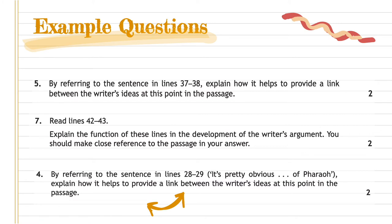Like 'in your own words', we're looking for the phrase 'using your own words'. For linking questions, the key phrases are: 'link', 'linking function', and 'link between'. For example, question five says: 'by referring to the sentence in lines 37 to 38, explain how it helped to provide a link between the writer's ideas at this point in the passage.' We see the phrase 'a link', so we know it's a linking question. Question seven says: 'explain the function of these lines in the development of the writer's argument' — the word 'function' tells us. And question four says: 'by referring to the sentence in lines 28 to 29, explain how it helps to provide a link between the writer's ideas.' So we identify linking questions by looking for the phrases: link, linking function, function, or 'a link between'.